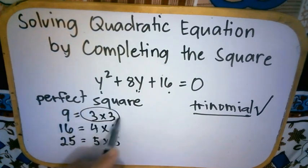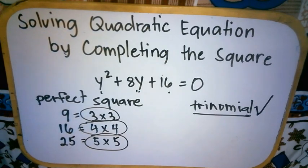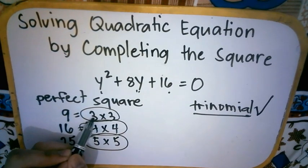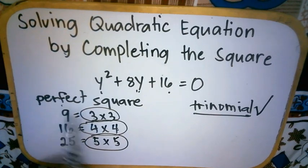So, they have similarities. Ibig sabihin, pag sinabi natin yung perfect square, yung factor nila ay pareho. We have 3 and 3, 4 and 4, 5 and 5. So, pag pinagsama natin, perfect square trinomial.